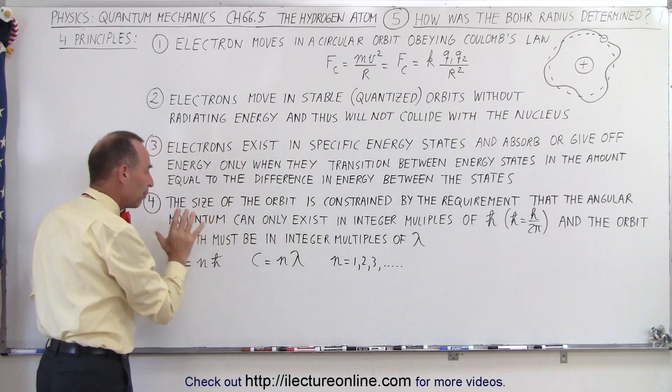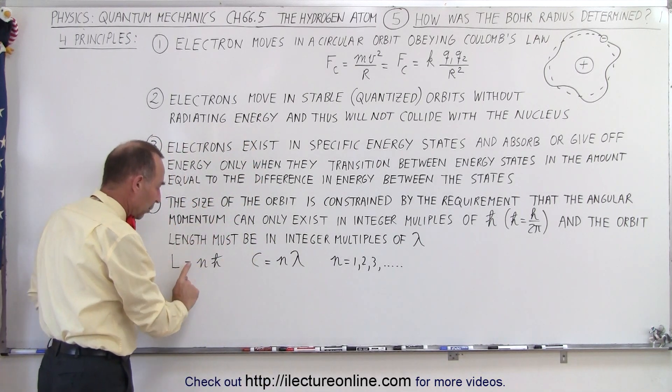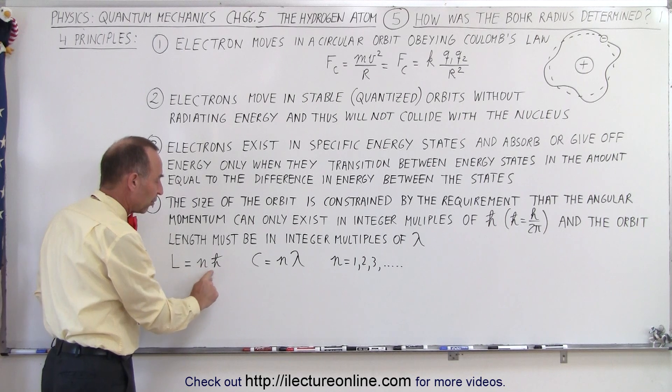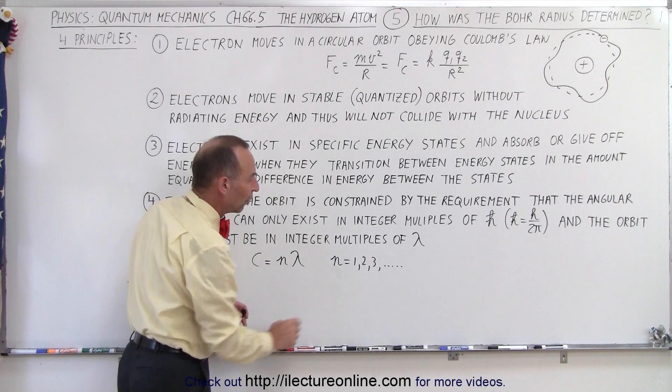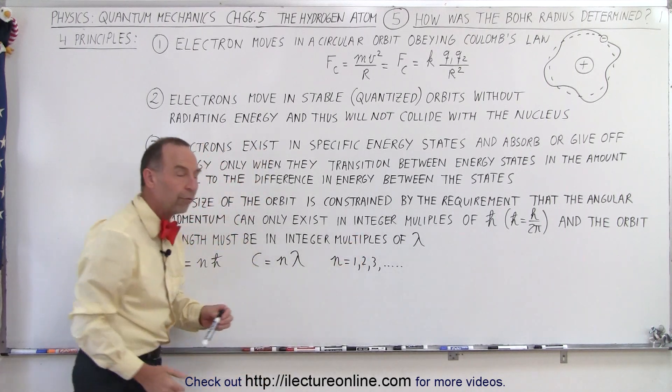So two prime conditions: that angular momentum was quantized in integer numbers of h-bar and the circumference was quantized in integer numbers of wavelengths, where n of course is 1, 2, 3, and so forth.